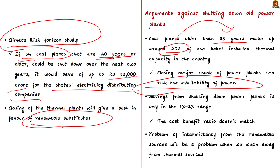While we discussed that closure is cost efficient, the actual savings achieved by closing aging coal plants and investing in new ones are very low — only about 1% to 2%. The cost-benefit ratio does not match. Just as no one deposits money in a bank for only 1% interest, this move also has very low returns. So instead of spending on closure and replacement, we can continue with the current aging plants. This is a major con.